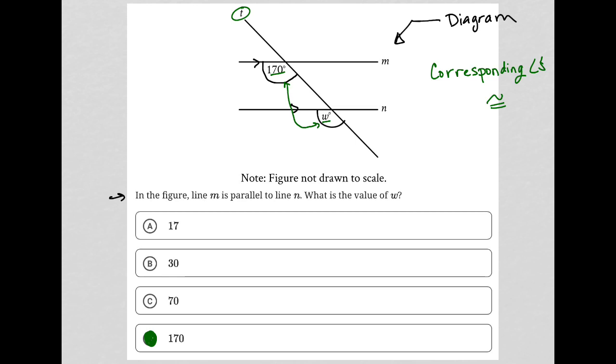And just so you know, in case you've forgotten, the reason why those are corresponding is because they're made in the same way. They are both under the parallel lines and they're both to the left of the transversal. So anytime you have two angles made in the exact same way, those angles will be corresponding and they will have congruent measurements.